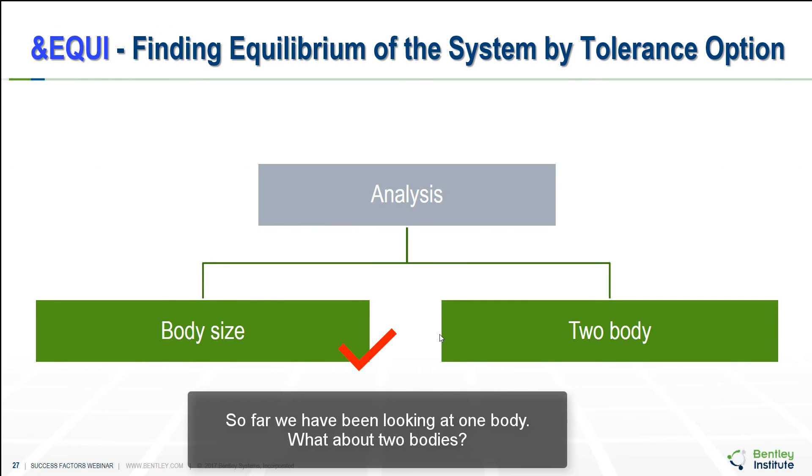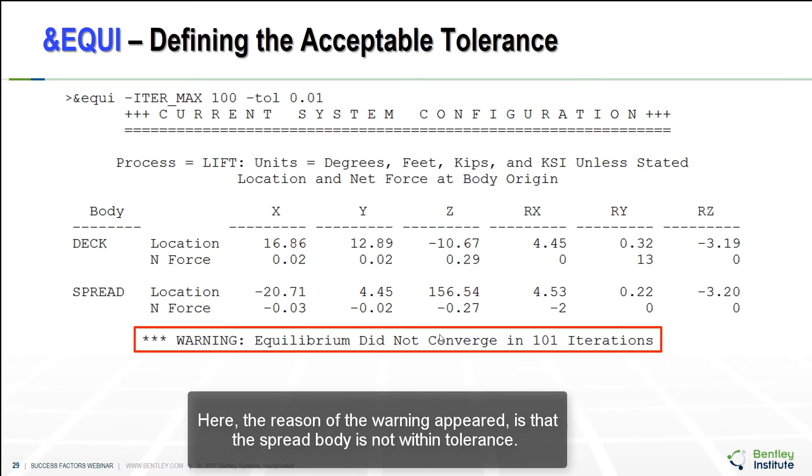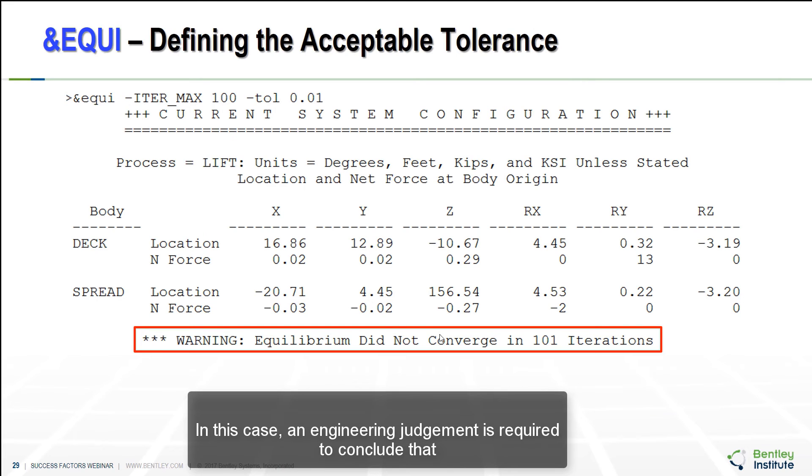So far we have been looking at one body. And what about two bodies? For two bodies we have a dead weight of 10,800 and the spreader bar has weight of 5. This time I've changed the tolerance to 0.01. Here the reason of the warning appear is the spread body is not within tolerance. This the case there is engineering judgement is required to conclude that the dead body is with interest to the project and the body spread is controlling the message. This is the tolerance set to 0.01.